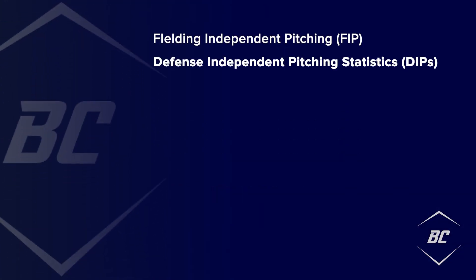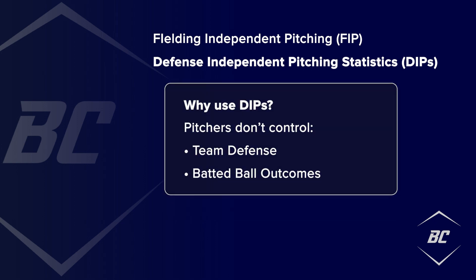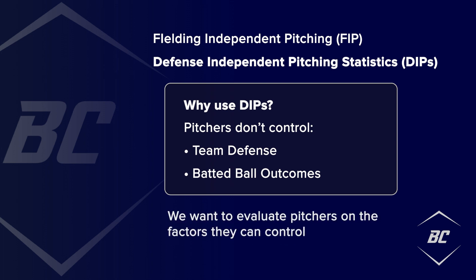FIP is one of many Defensive Independent Pitching statistics, or DIPs for short. The main methodology behind FIP is to remove team defense out of the equation and sequencing of hits, because a pitcher has little control over what happens once a ball is put in play and the quality of defense behind them. If you are trying to analyze how well a particular pitcher threw, you likely wouldn't consider factors that he can't control.